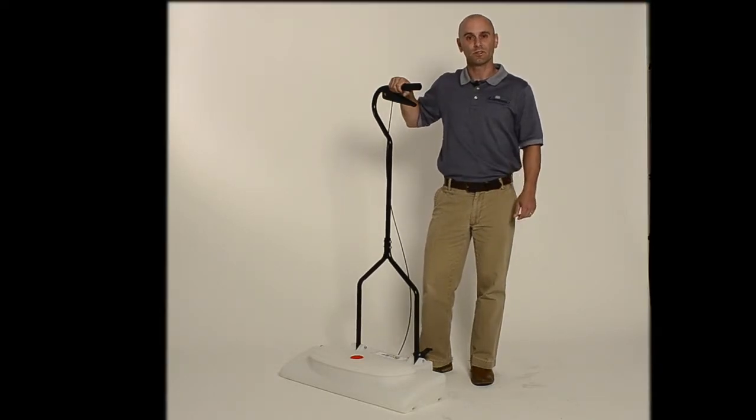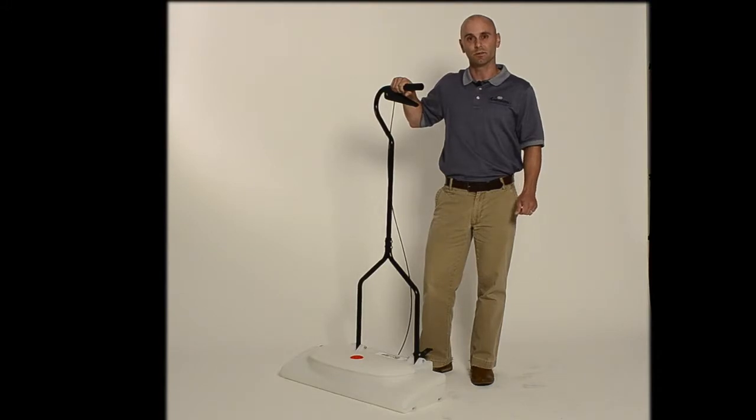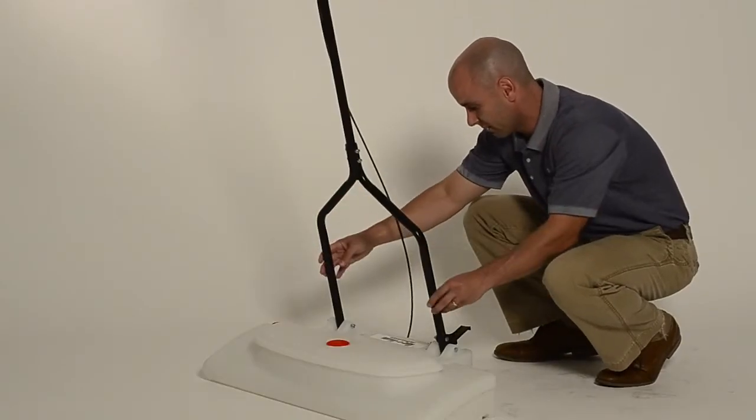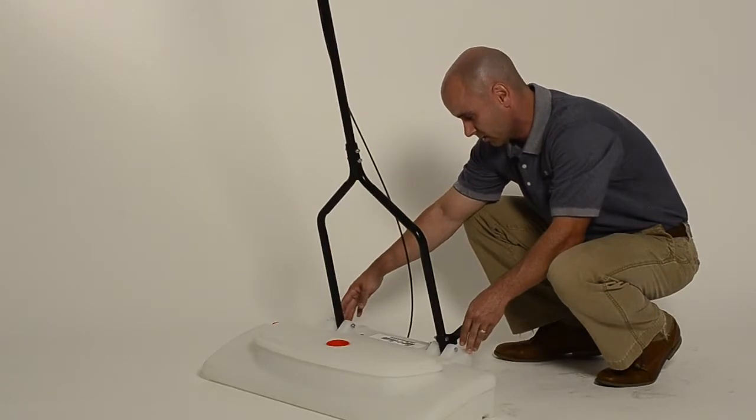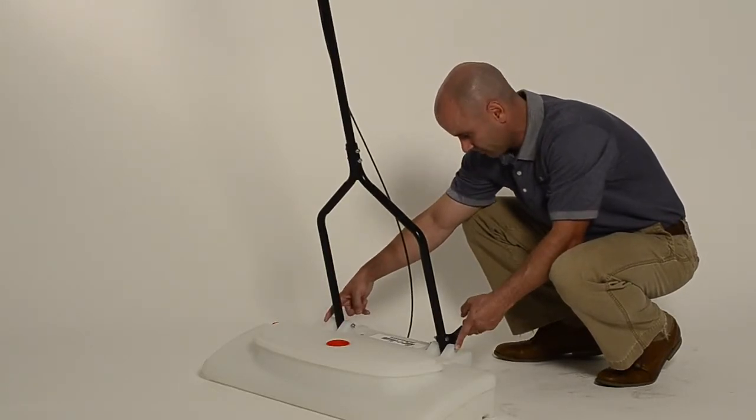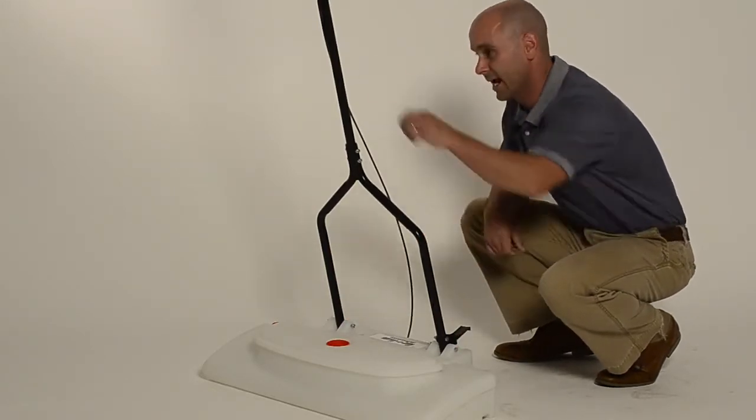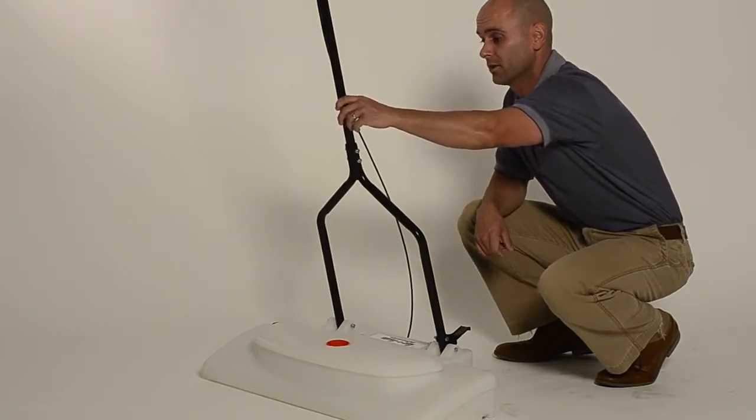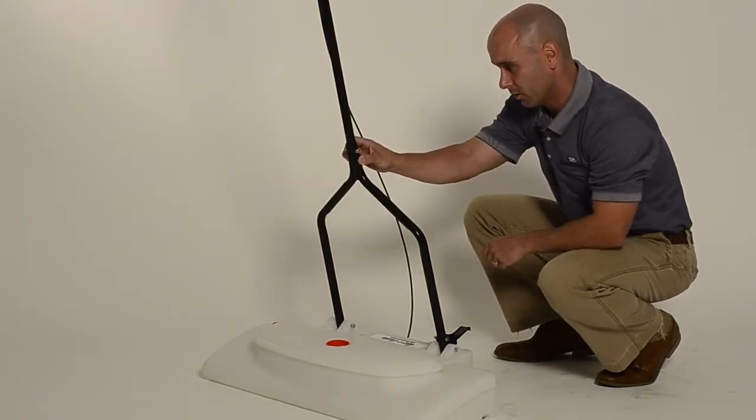I've already assembled this unit here, but there are a couple very easy steps to assemble it once you receive it. Step one, simply attach the right and left legs to the base of the unit with the bolts provided. Step two, attach the upper handle with the lever to those two legs, again with the bolts provided.